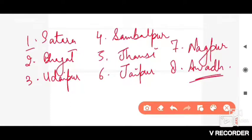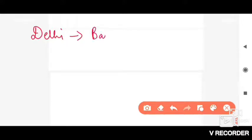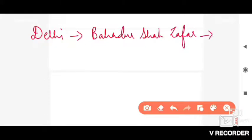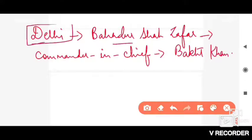When so many states were captured due to the Doctrine of Lapse, people became angry, and the rulers of those states started revolting. From Delhi, Bahadur Shah Zafar fought, and his Commander-in-Chief at that time was Bakht Khan. From Kanpur, Nana Sahib fought — his real name was Dhondu Pant — and with him was Tantia Tope, whose real name was Ram Chandra Pandurang.